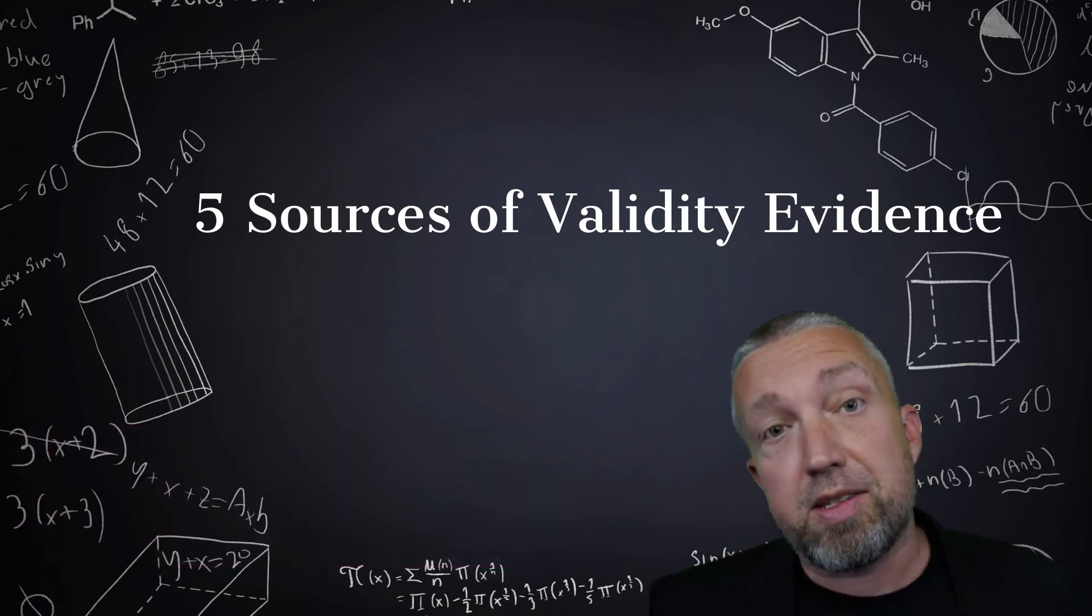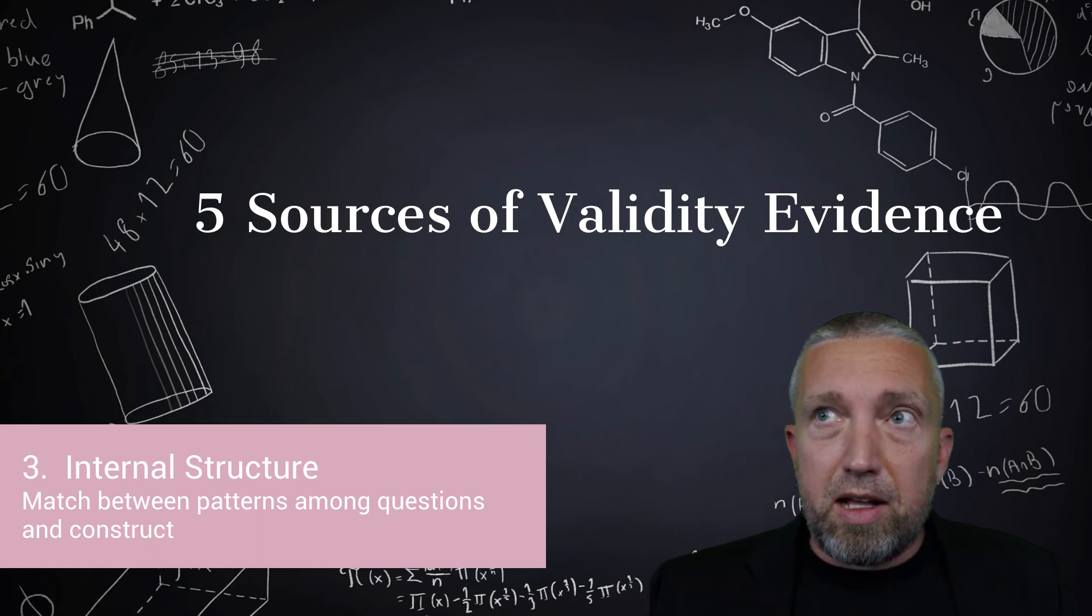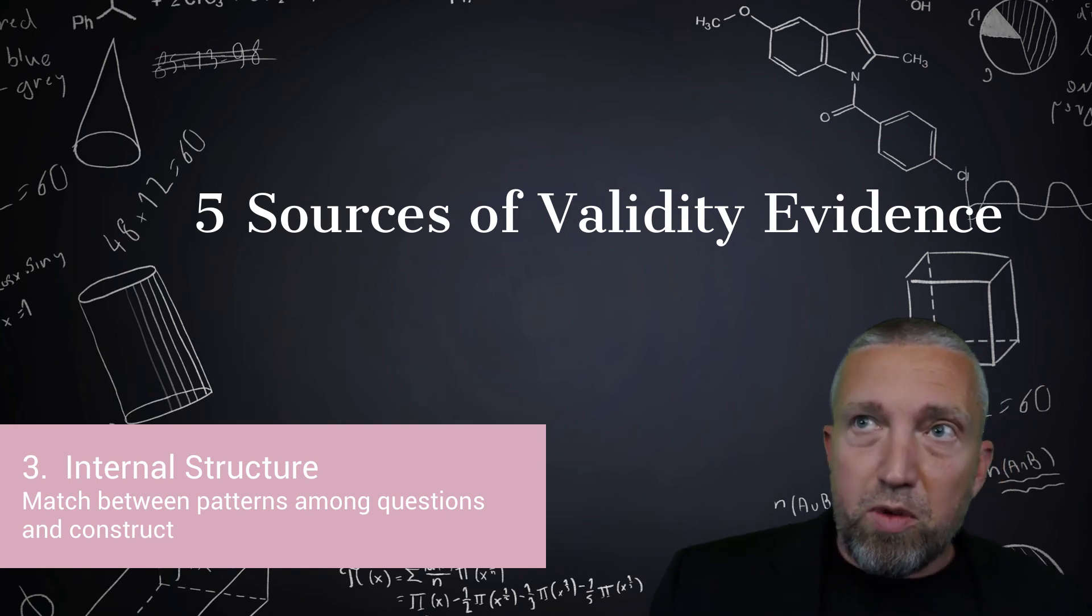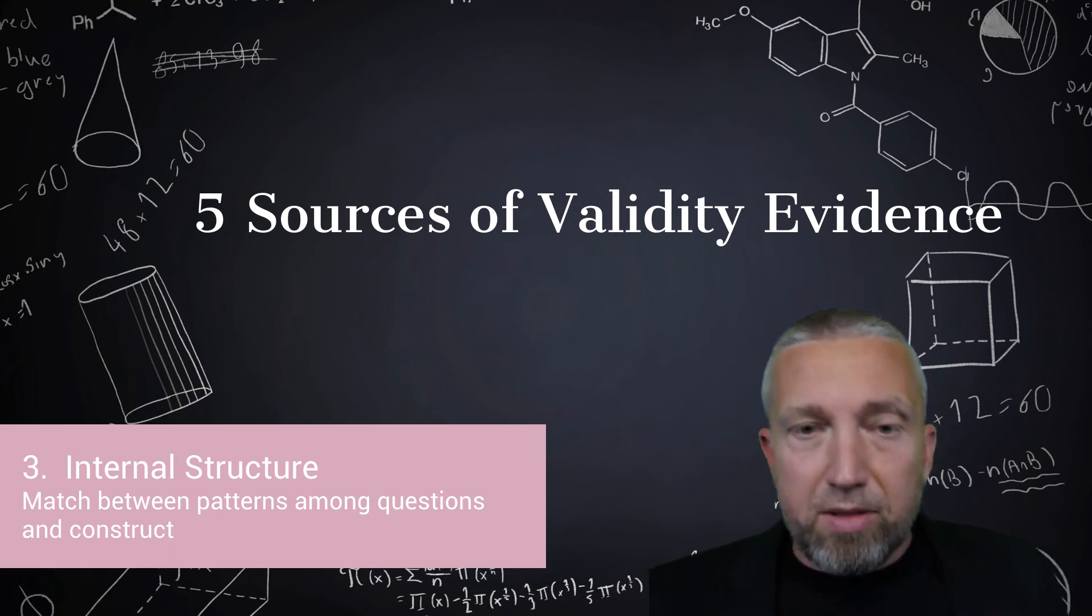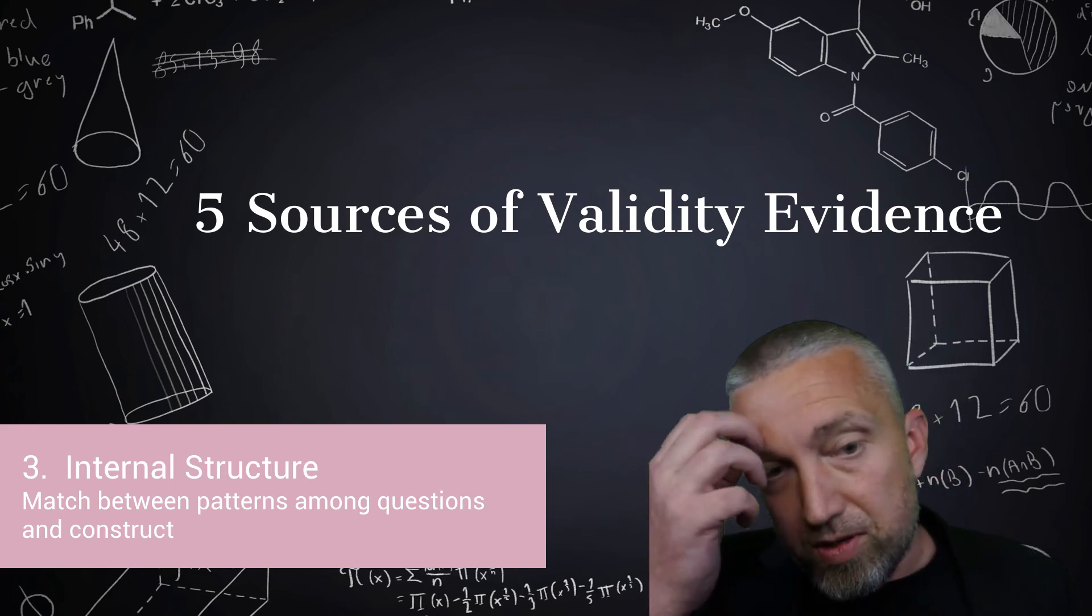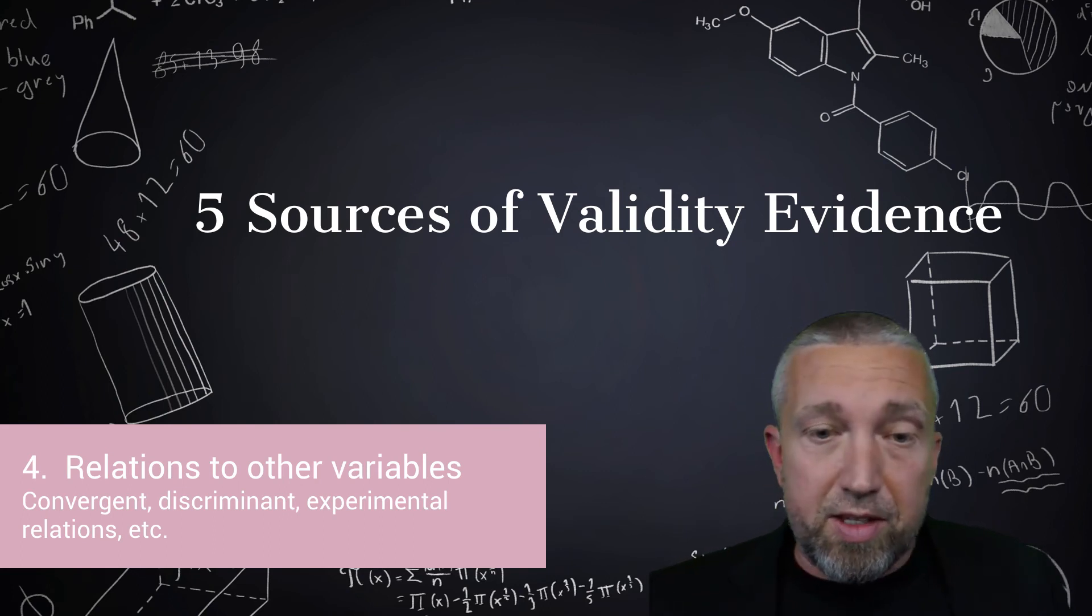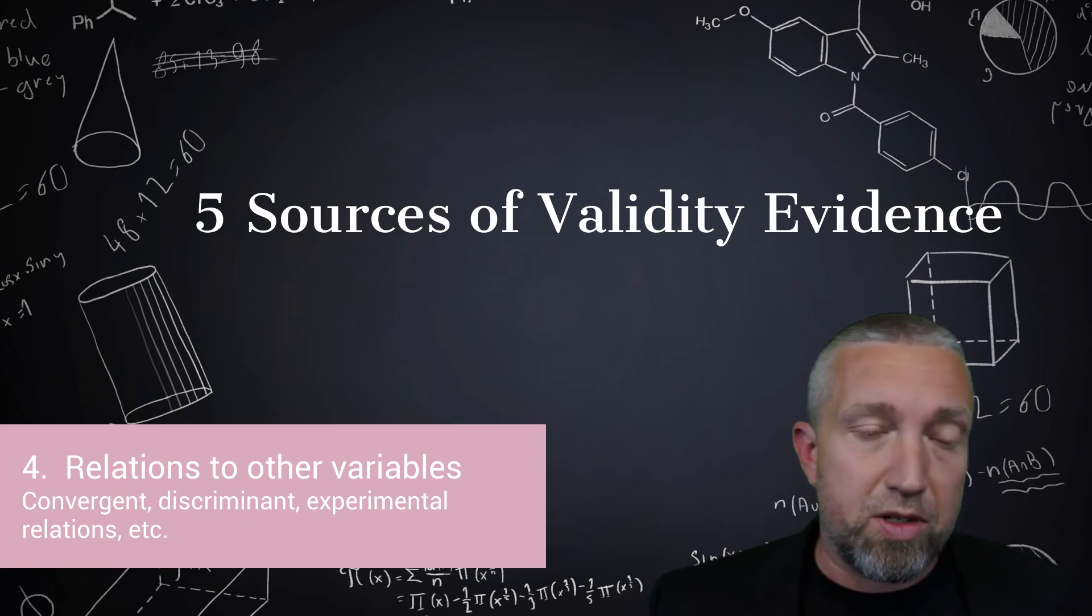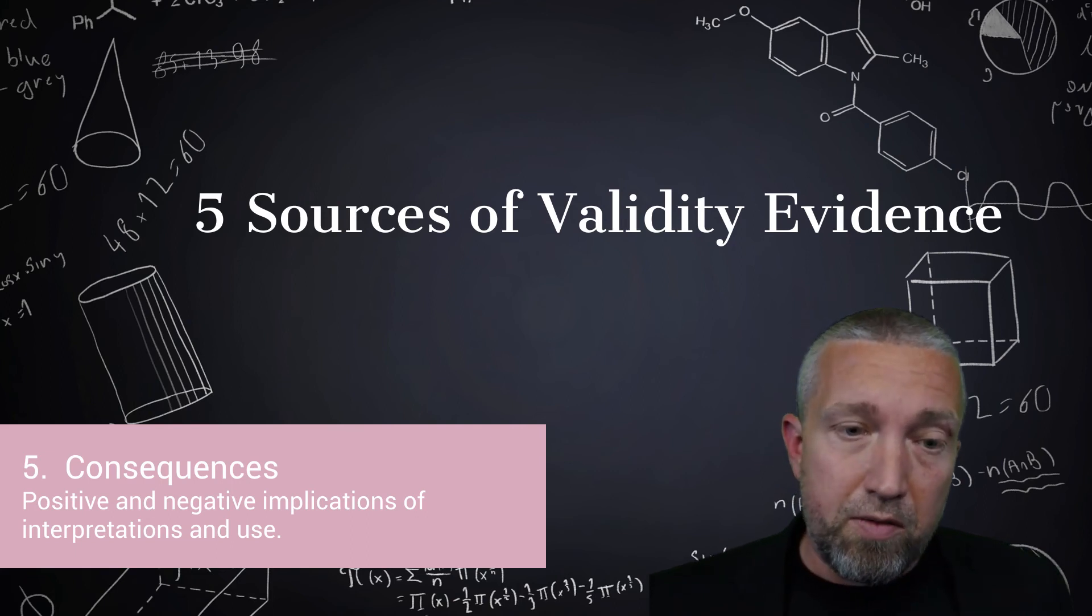The third is internal structure. This is basically the extent to which the relationships that exist among my items or the test questions reflect what we think about the construct. We usually do things like a factor analysis to look at these types of questions. The fourth source of evidence is relations to other variables. We would look at things like convergent and discriminant relationships. Consequences are also considered to be a source of validity evidence.